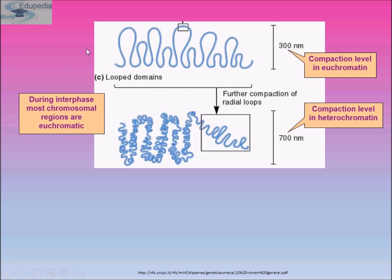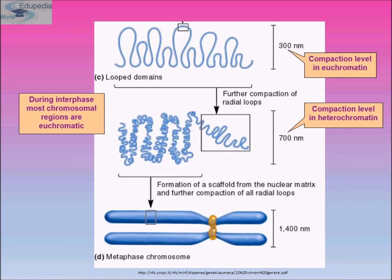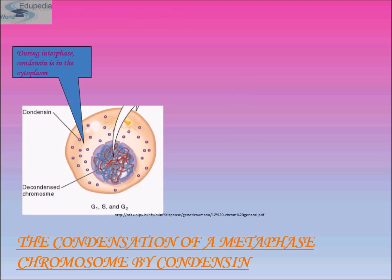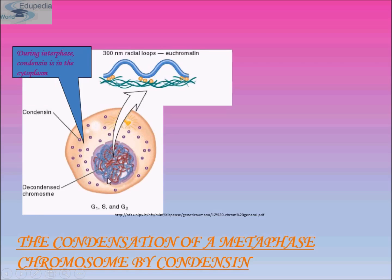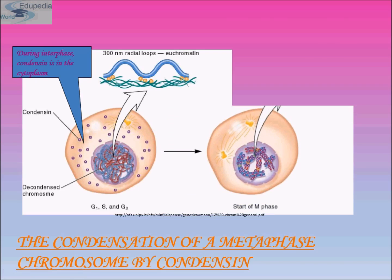During interphase, most chromosomal regions are euchromatin. Formation of a scaffold from a nuclear matrix and further compaction of all radial loops produces approximately 1400 nanometers in diameter, forming the metaphase chromosome. During interphase, condensin is in the cytoplasm and the chromosome is decondensed, forming radial loops of euchromatin about 300 nanometers in diameter. As the cell progresses through G1, S, and G2 phase and enters the mitotic phase, condensin travels into the nucleus.